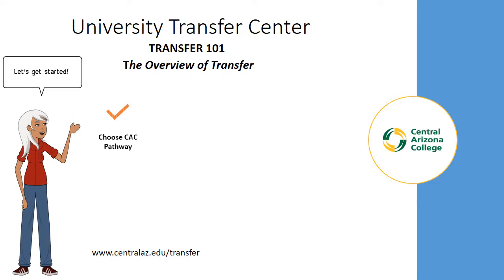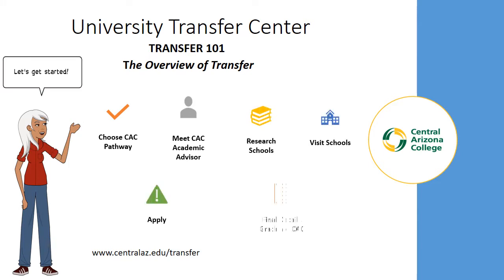The six steps to ensure a successful transfer from CAC to the university are: choose a CAC pathway, meet with your CAC academic advisor, research and visit schools, apply for admissions, finalize details, and graduate from CAC. In this presentation, we will quickly review these steps. For more detailed information, please visit us at centralaz.edu/transfer.